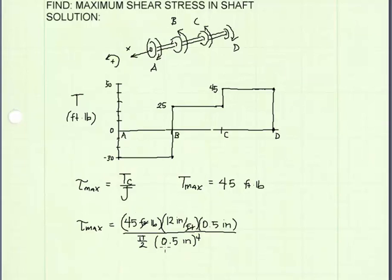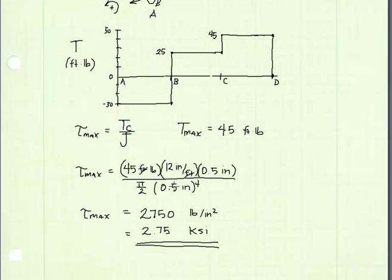The polar moment of inertia for this solid shaft is pi over 2 times the radius, 0.5 inches, to the fourth power. This calculates to be a maximum shear stress of 2,750 pounds per square inch, or 2.75 KSI. And we're done.